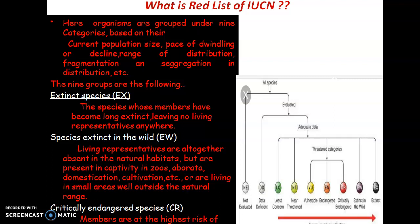The first category is called Extinct species, represented by EX. These are species whose members have become long extinct — they have been extinct for a long time and are not represented by any organism on Earth. For example, dinosaurs are an extinct species.